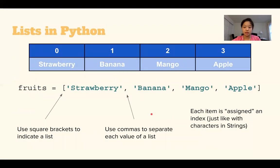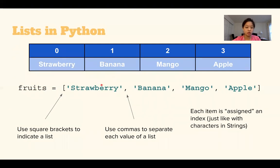So let's look at this example in our code using the same fruits example. We're going to declare a list variable called fruits and set it equal to a list. To declare the list, we start with an opening square bracket and then put each of our list items in. In this case they're strings, like the string strawberry, and each list item is separated by commas. Each item is assigned an index.